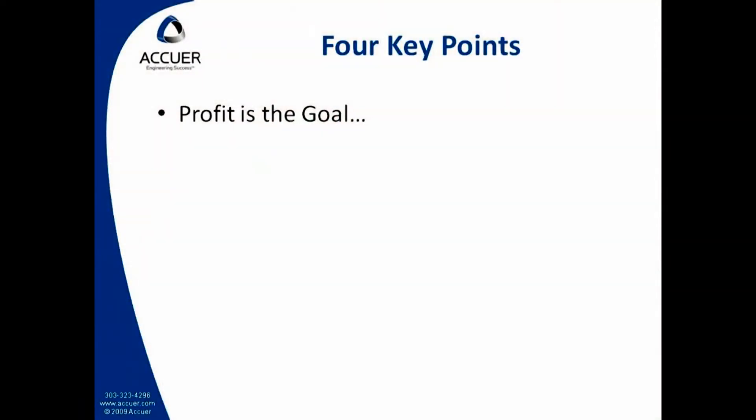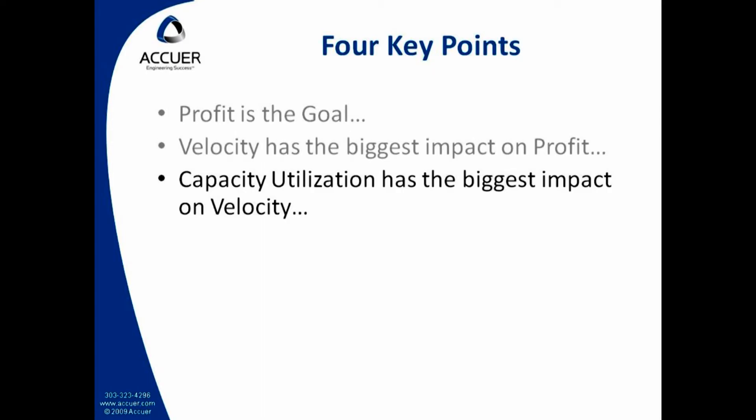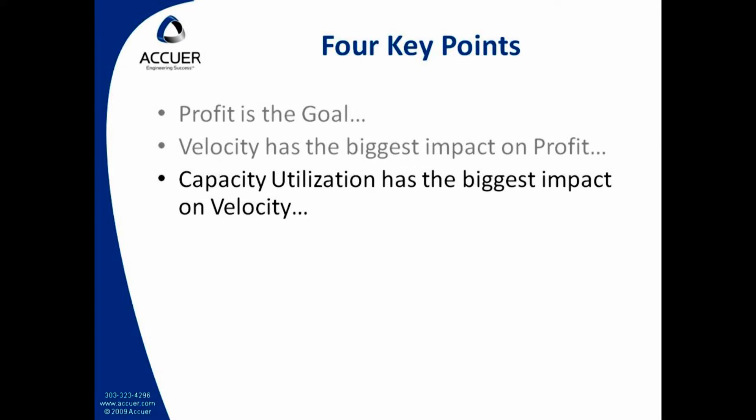I said I'm going to make four key points, but before I go into them in detail I want to briefly review them. The first one is that profit is the goal — and what has the biggest impact on profit? The answer is velocity: getting new products to market quickly is the biggest leverage you have for profit in new product development. So what has the biggest impact on velocity? The answer is capacity utilization. I'll explain that with an example and then show you two ways you can increase velocity without increasing capacity.